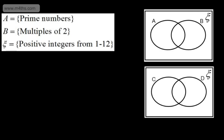This video is a basic tutorial on set notation and Venn diagrams to GCSE level. A set is simply a collection of objects. For example, set A are the prime numbers. The numbers in this set would either be called the elements or the members of that set.